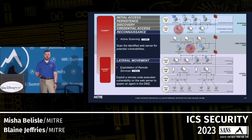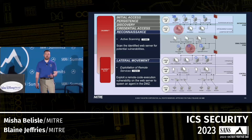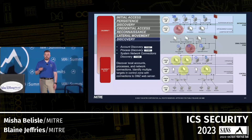After identifying that web server, we can do further enumeration, scan it, find a potential vulnerability, and exploit it. The way Caldera works is by running agent payloads on the systems you want to execute abilities from — so as long as you can transfer and run the agent payload, you can spawn and execute abilities from that workstation. Now with an agent in the DMZ we can establish persistence and do additional discovery, hopefully finding more assets lower in the network.